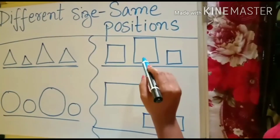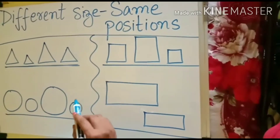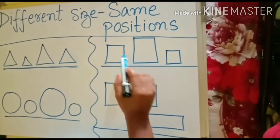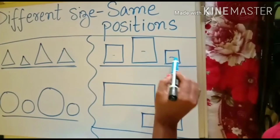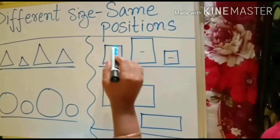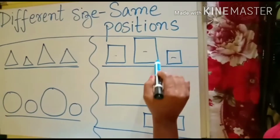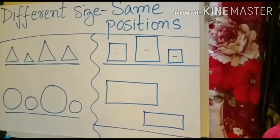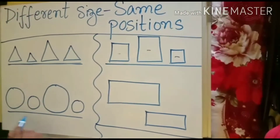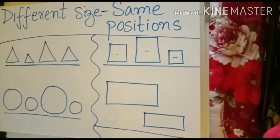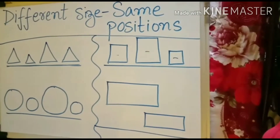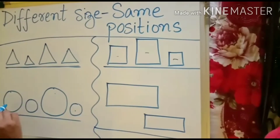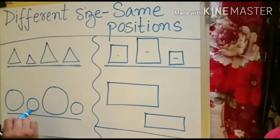Now let us see the square as well. Can you see we have the same positions but different sizes — this one is big, but this one is small, and this one is the smallest. Now let us have a look at the circle. It has the same position but different size: big circle, small circle, big circle, small circle.